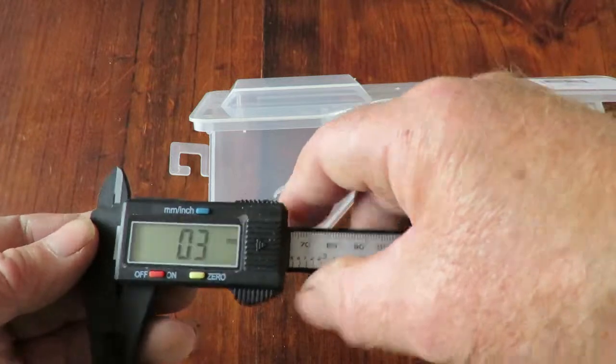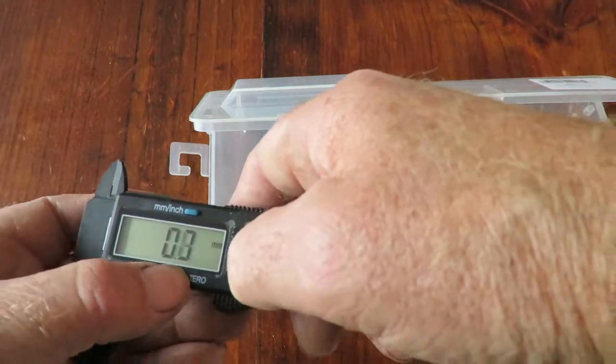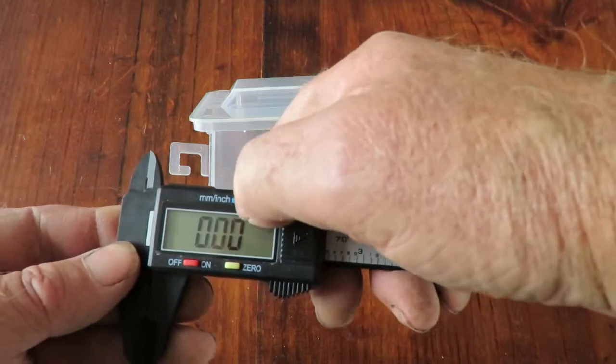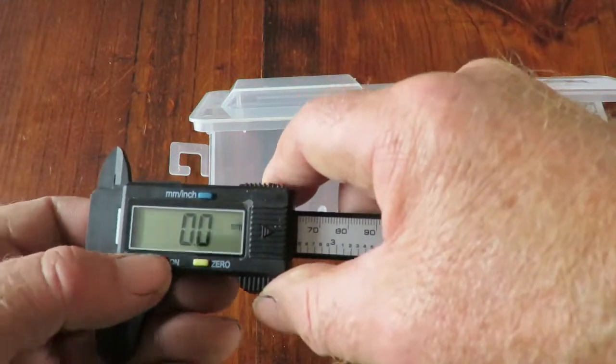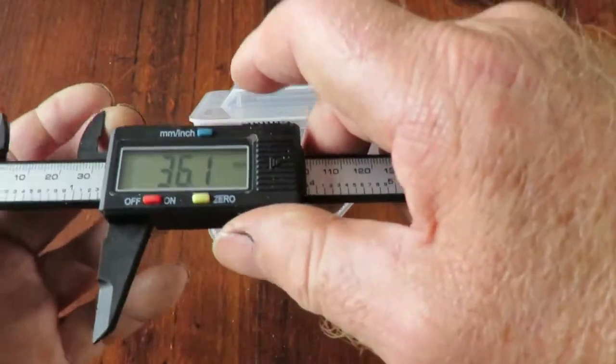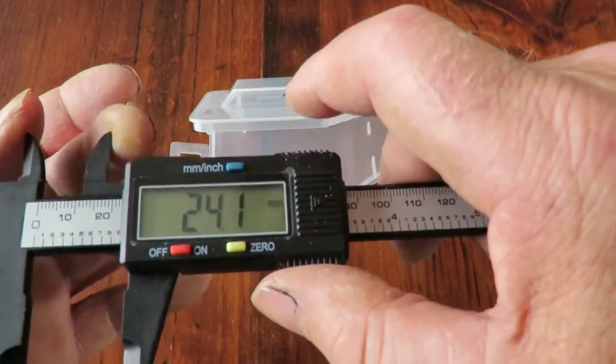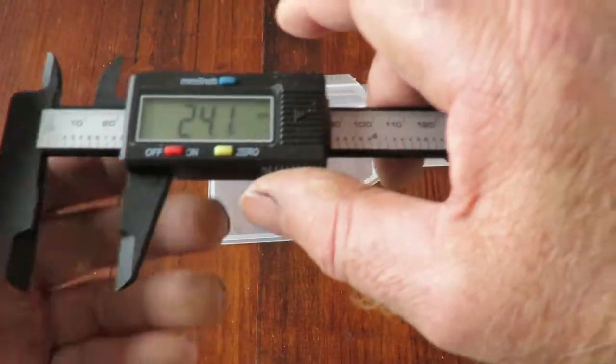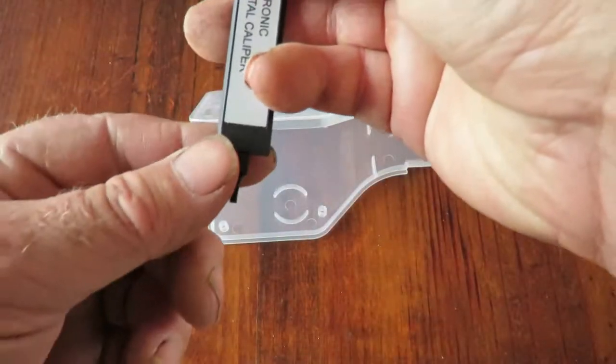The caliper itself, you just simply hit the button there to reset. You've got a choice of millimeters or inches by pressing the button on the top. The button on the side here works quite nicely. You've got the inside hole dimension here, you've got outer dimensions on this one, you've got a depth gauge on the bottom.